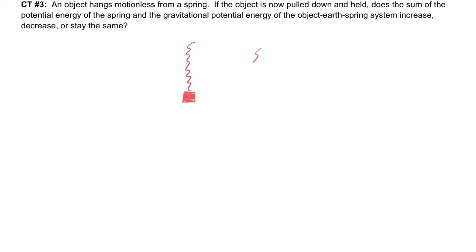We now take the object and pull it down and hold it. And the question is, does the sum of the potential energy of the spring and the gravitational potential energy of the object-Earth-spring system increase, decrease, or stay the same?